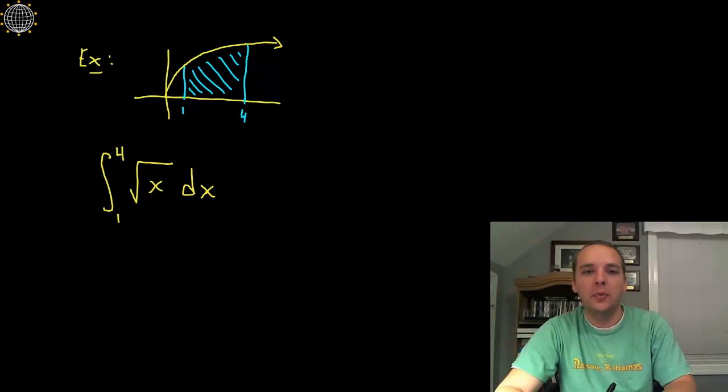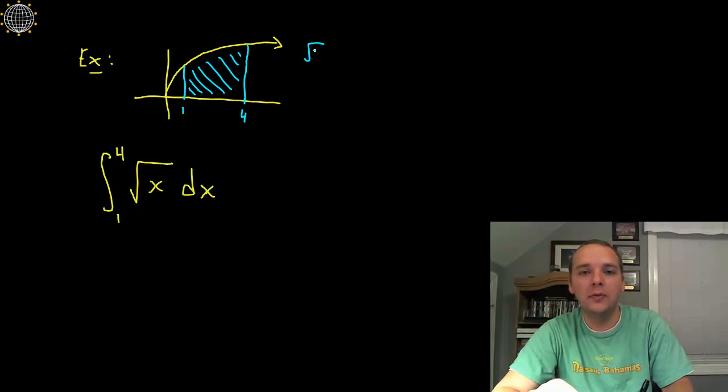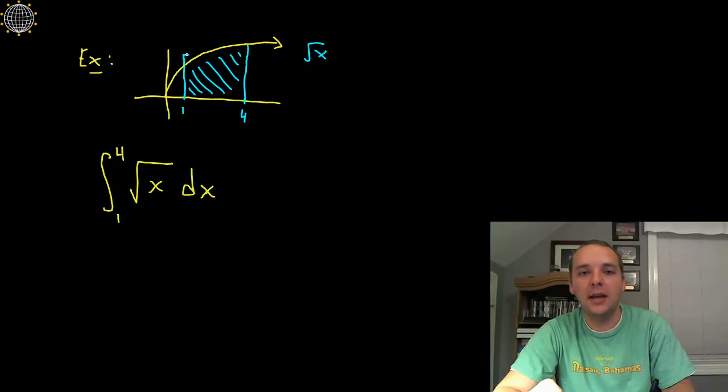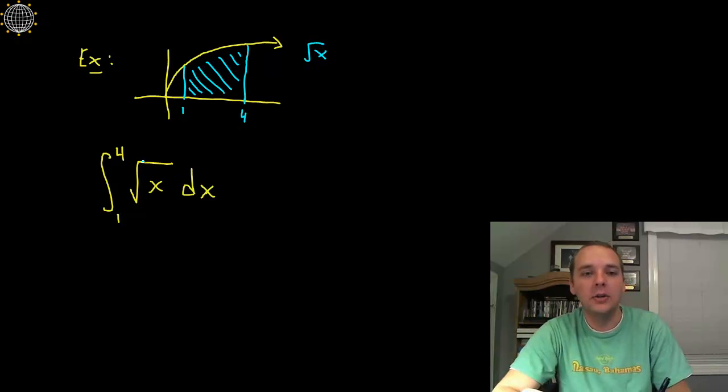Alright, so the example we're going to try is actually an example I did a couple of videos ago with an approximation. I did a, I believe it was a right hand sum of the area under the square root function from one to four. So I'd encourage you to go back and watch that video. And I made a comment that the area, the answer that we got was not exact, because we actually had these rectangles built in here that had the error and what not. So, but we're going to try to do it exactly today, by hand, no calculator. So here we go. Square root of x, that's our little f, that's our function that we're integrating.